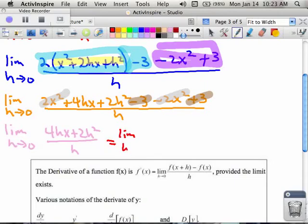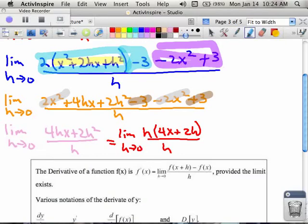So we have the limit as h is turning into zero. But this time I factor h out of the top. And I get 4x plus 2h all over h. And my h's go away.